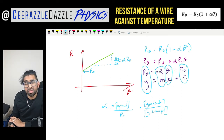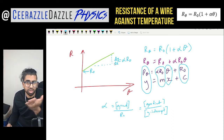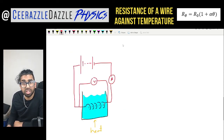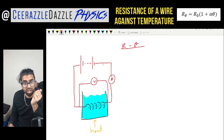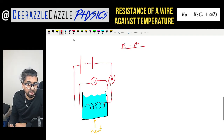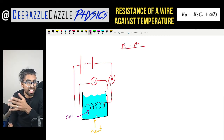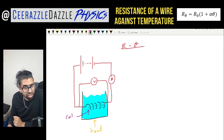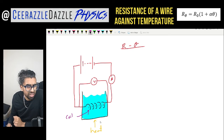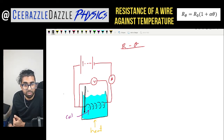For the practical setup to investigate resistance versus temperature, in series we have a power supply and a coil of wire placed into water — heating the water is the easiest way to increase the temperature. A voltmeter is connected across just the coil to measure voltage, and we measure the current through the circuit. A thermometer is also placed inside the water to measure the temperature.